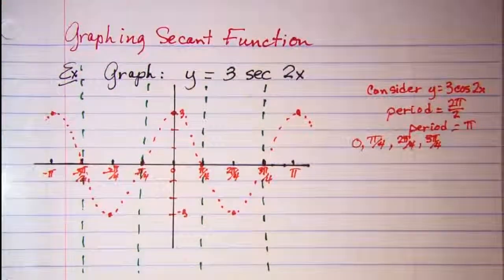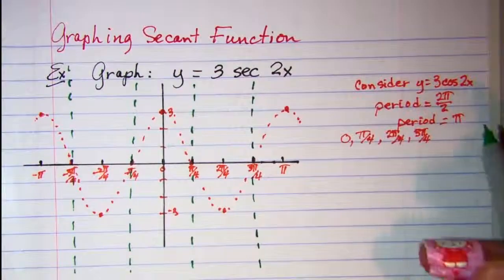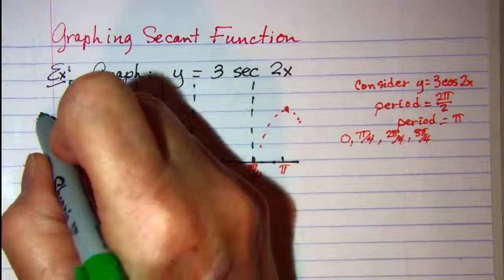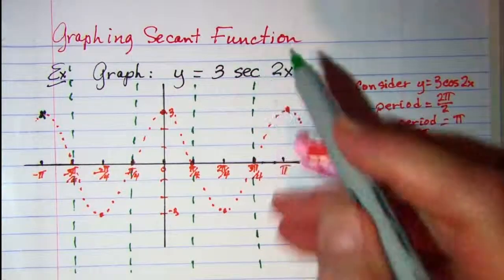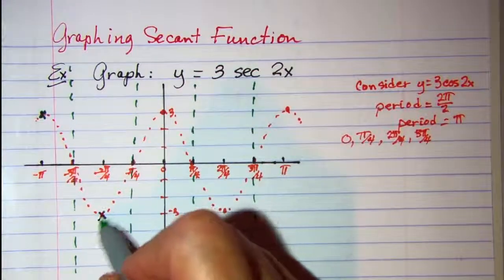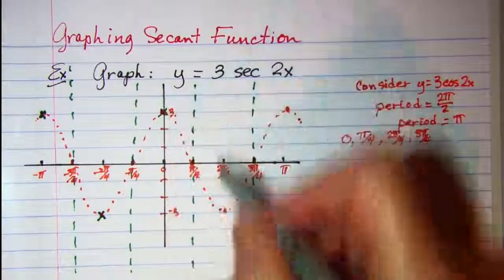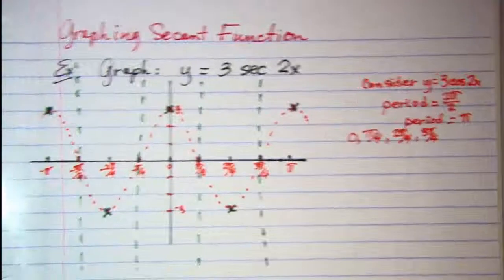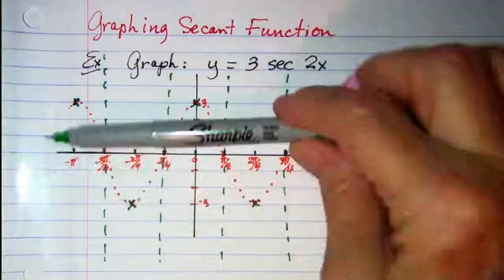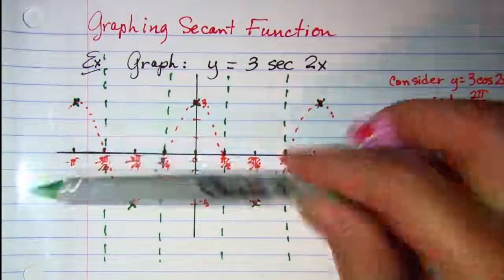And then everywhere where my cosine curve hits a max my secant is also going to hit that point. And for min, max, min, max, this inside here is going to be all just white space, just going to be blank for my secant curve.